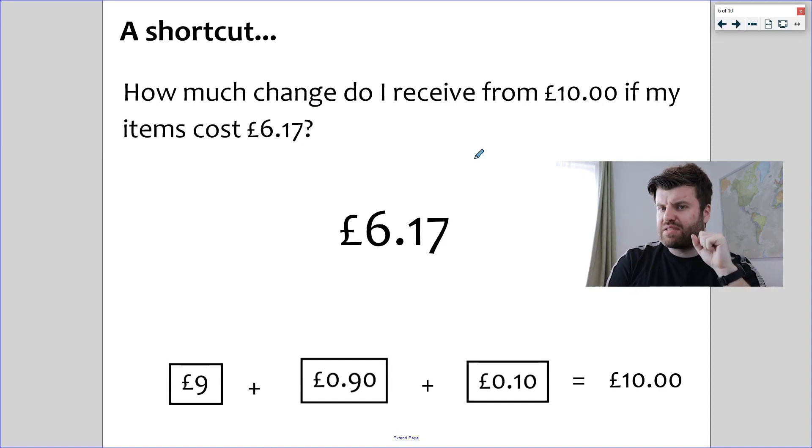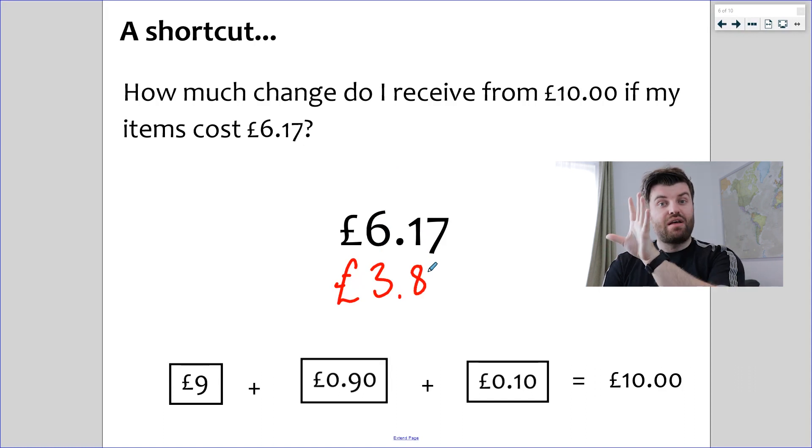Let's try it out on £6.17. So, £6.17. I give £10 in money to the shopkeeper. What change should I get? So, 6 plus 3 is 9. Tens column, 1 plus 8 is 9. And then, my final column, make 10, which is 3. £3.83. Simple as that. Add to 9, add to 9, add to 10. Let's try another one.